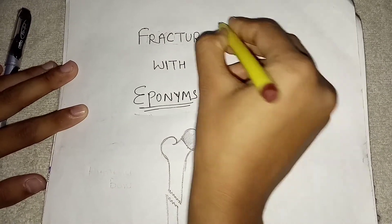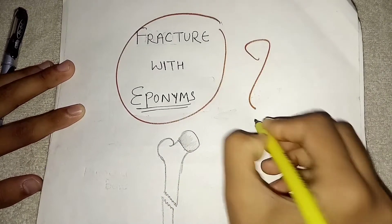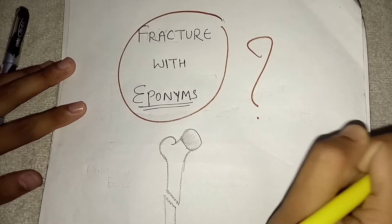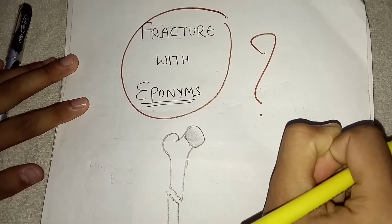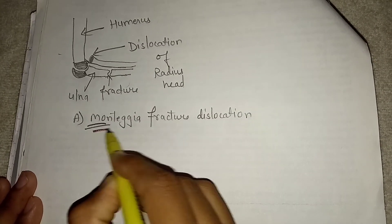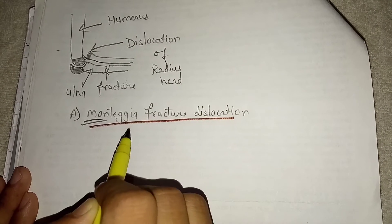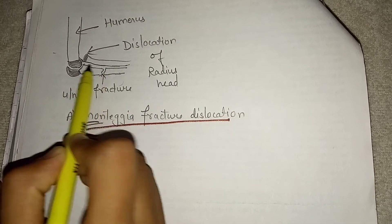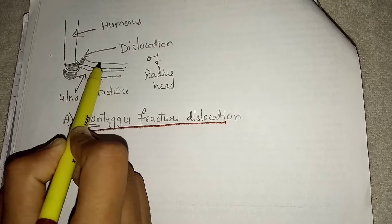Fracture with eponym. What does it mean? Basically some fractures are described by the name of the person who first described it. For example, Montagia fracture dislocation. It is the fracture of proximal third of ulna with dislocation of proximal head of radius.